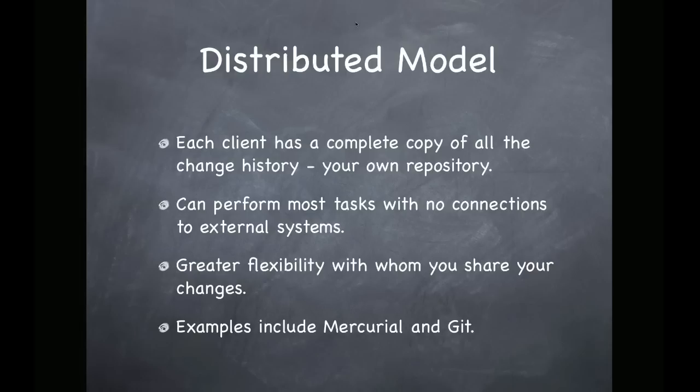With the distributed model, you could send it to someone who had time to review your changes before passing it out to the whole world. Two of the most popular new version control systems, Mercurial and Git, both use this method.